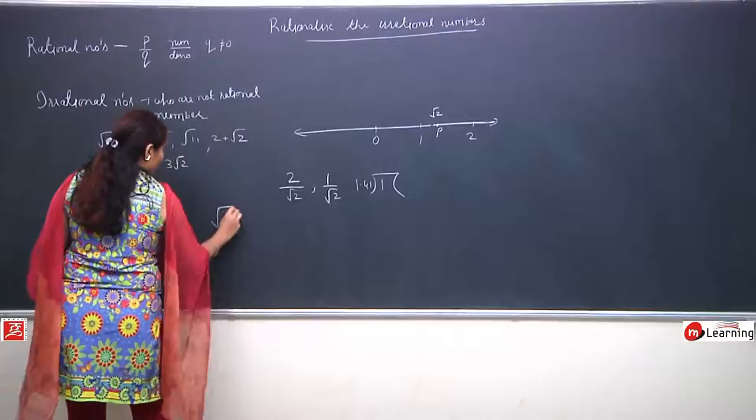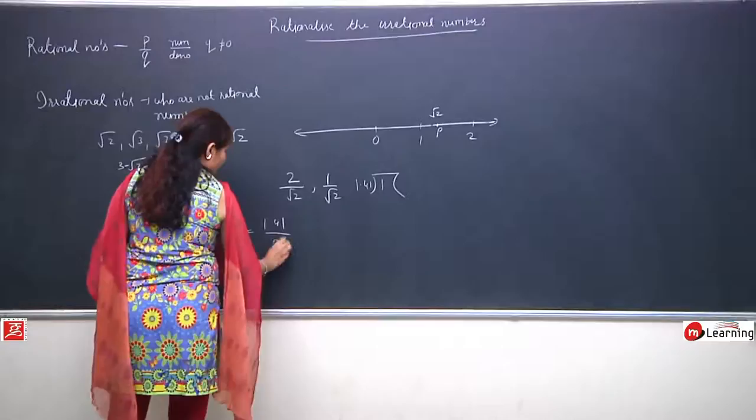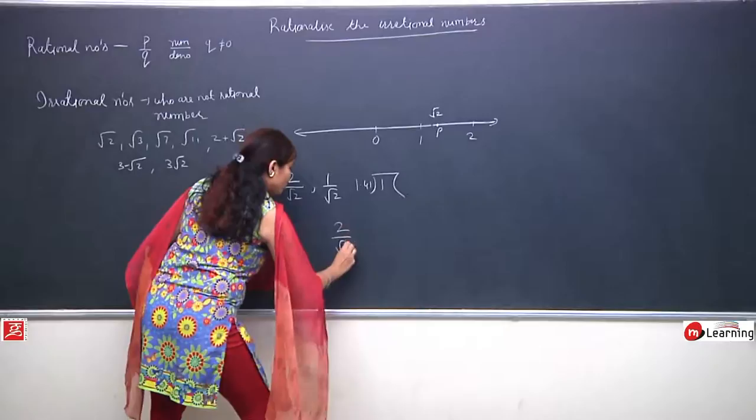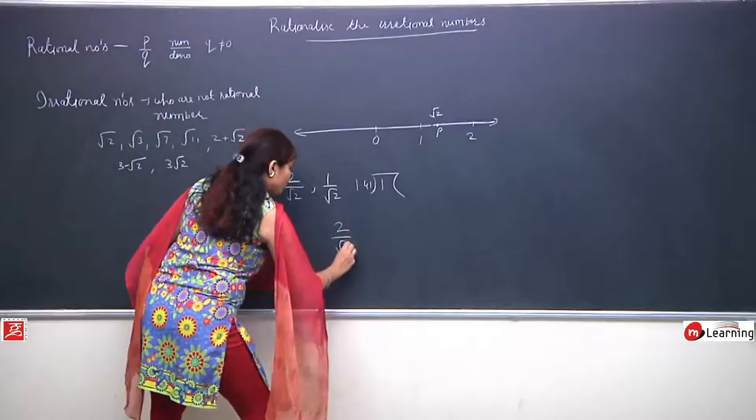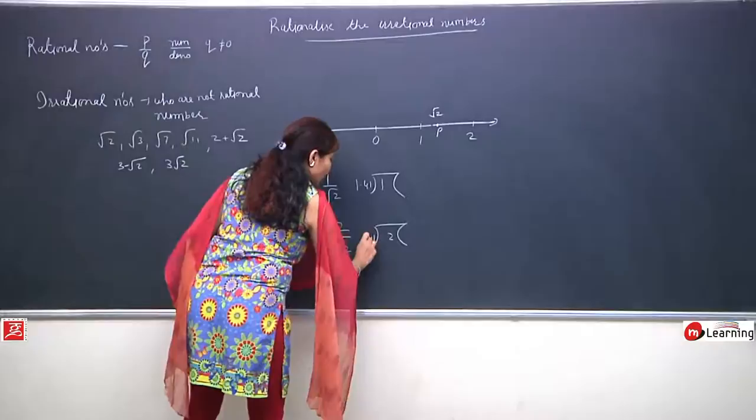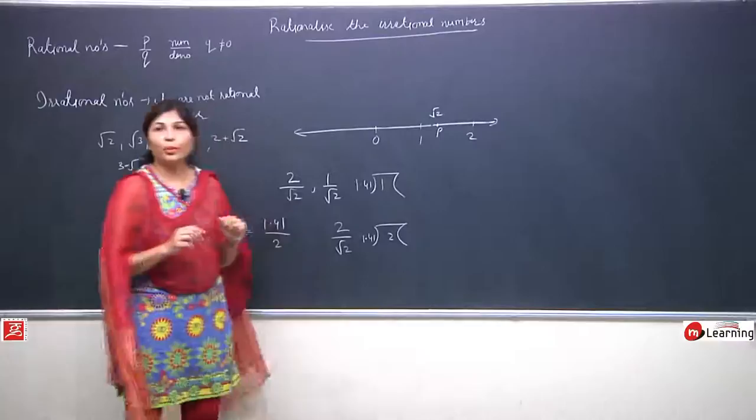Our focus will entirely be on the denominator, because even if the numerator is tough, it can be easily solved. But if the denominator is tough, solving it becomes very difficult. For example, if root 2 is in the numerator and 2 is in the denominator, it is easy to solve. But if 2 is in the numerator and root 2 is in the denominator, we have to divide 2 by 1.41.